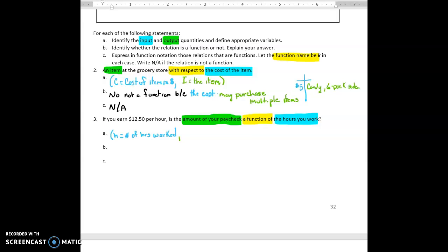And then the amount of the paycheck. We can either use A or P. I'm going to say A equals amount of paycheck, and our paychecks are in dollars in most cases, so we use the proper units there with the dollar sign.